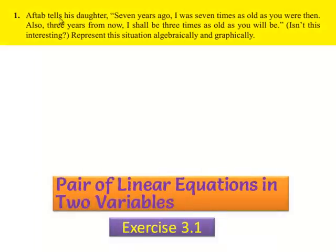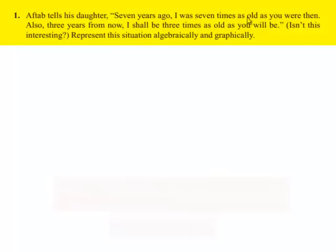Coming to the first problem: Aftab tells his daughter, '7 years ago, I was 7 times as old as you were then. Also, 3 years from now, I shall be 3 times as old as you will be. Isn't this interesting?' Represent this situation algebraically and graphically.